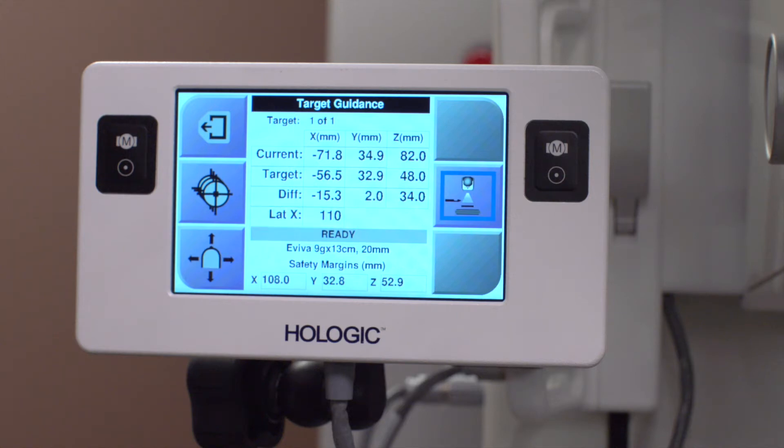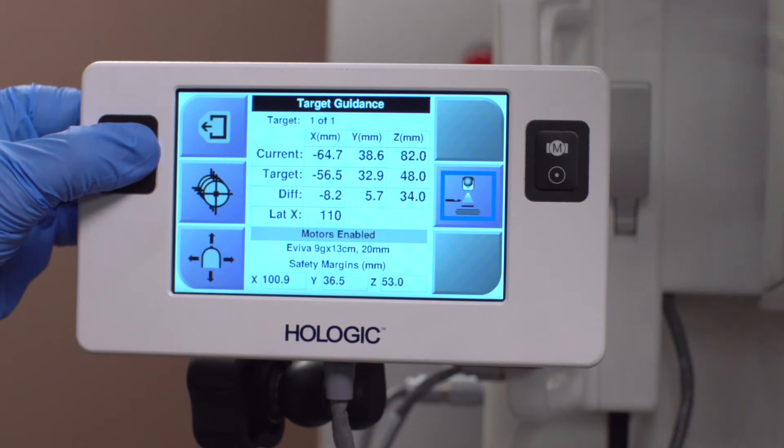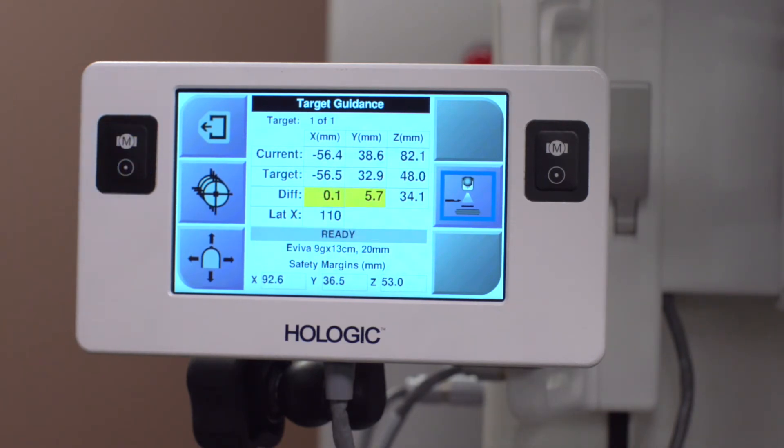The Z rail on the Affirm is advanced to the target by pushing the motor enable buttons on the front and back of the biopsy control module. The needle is in the correct location when the differential line shows color and stops moving.